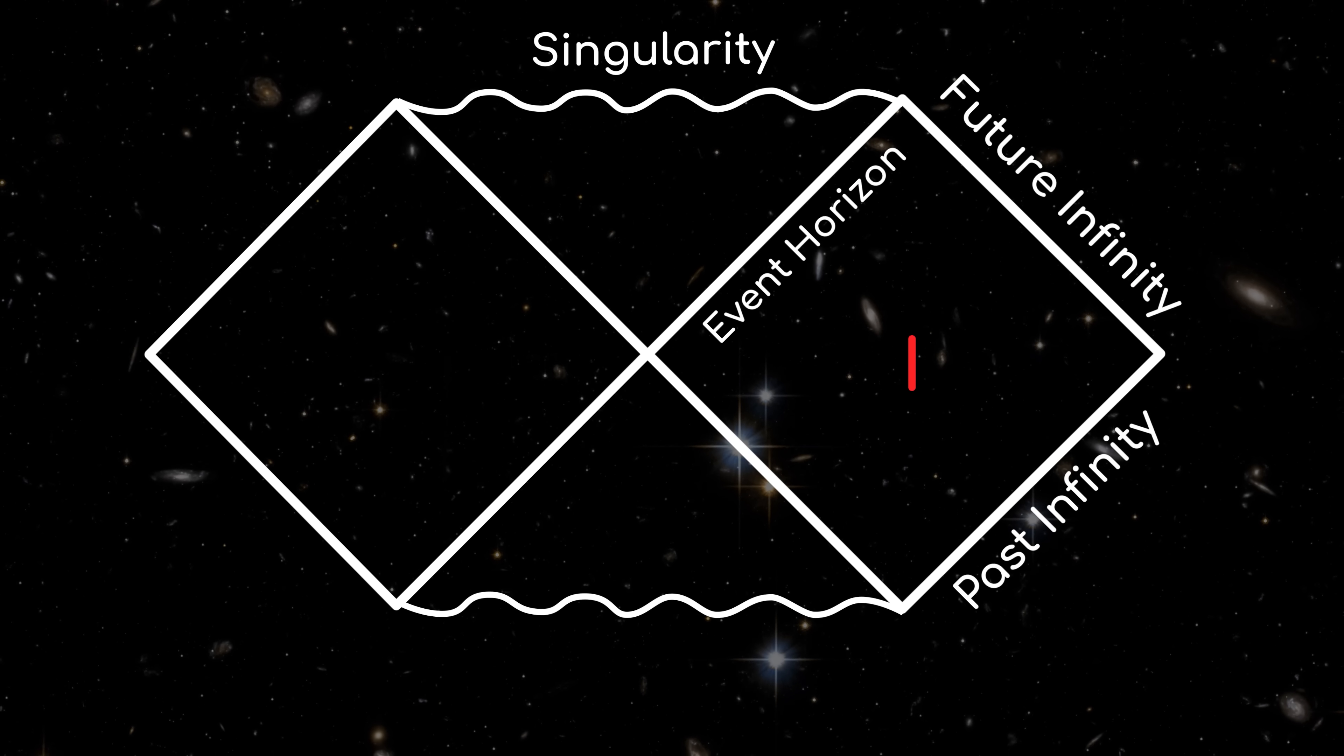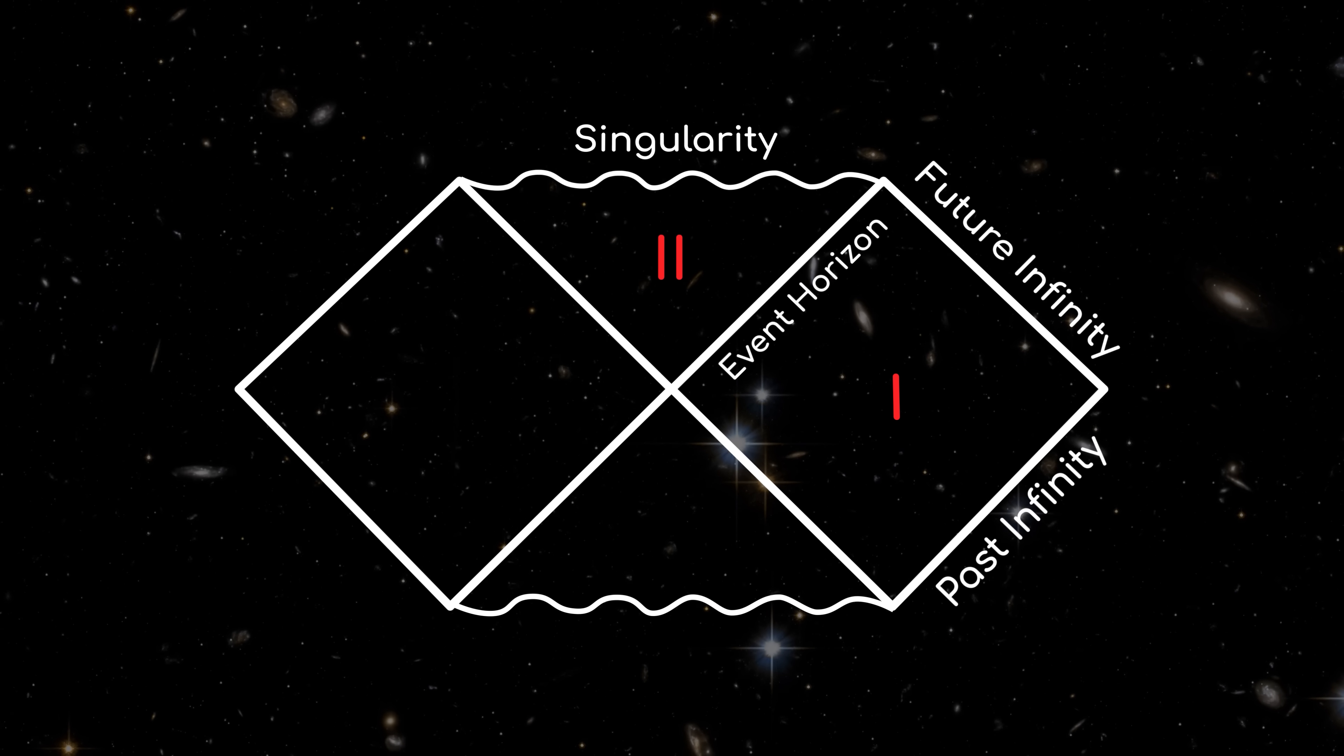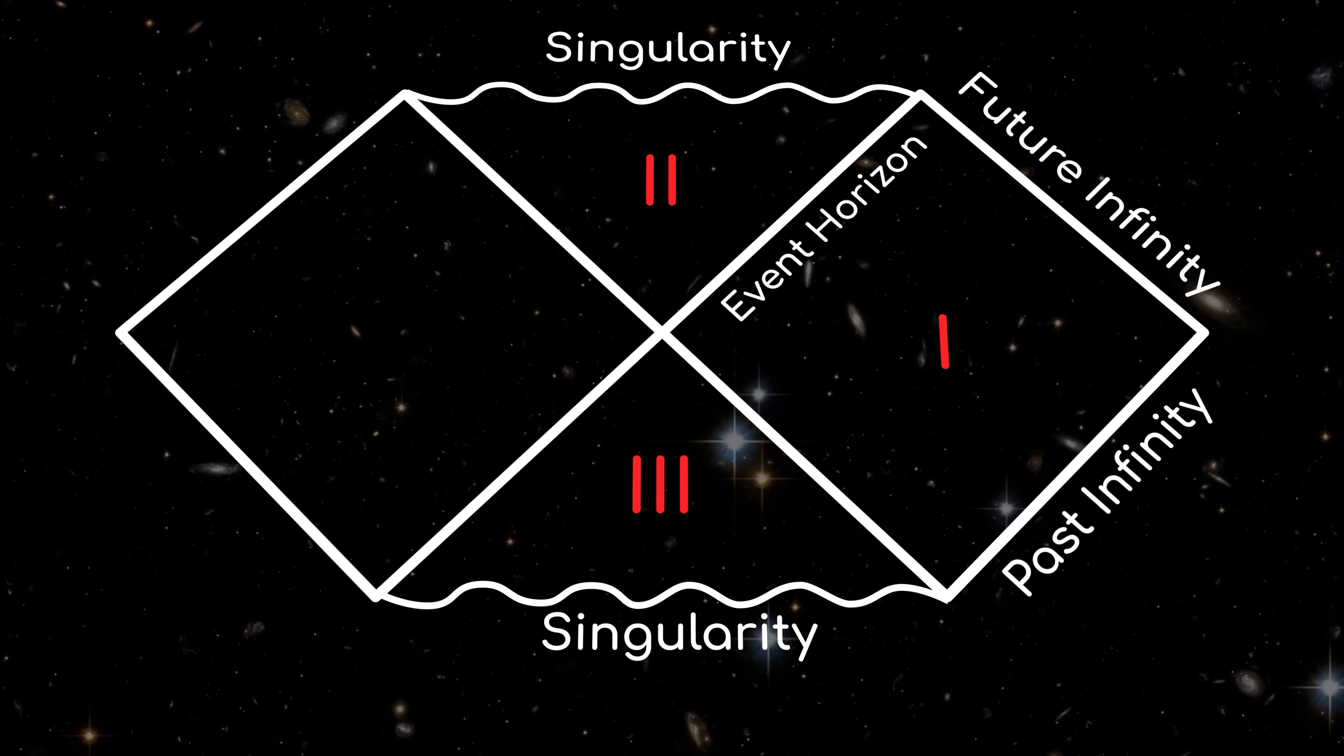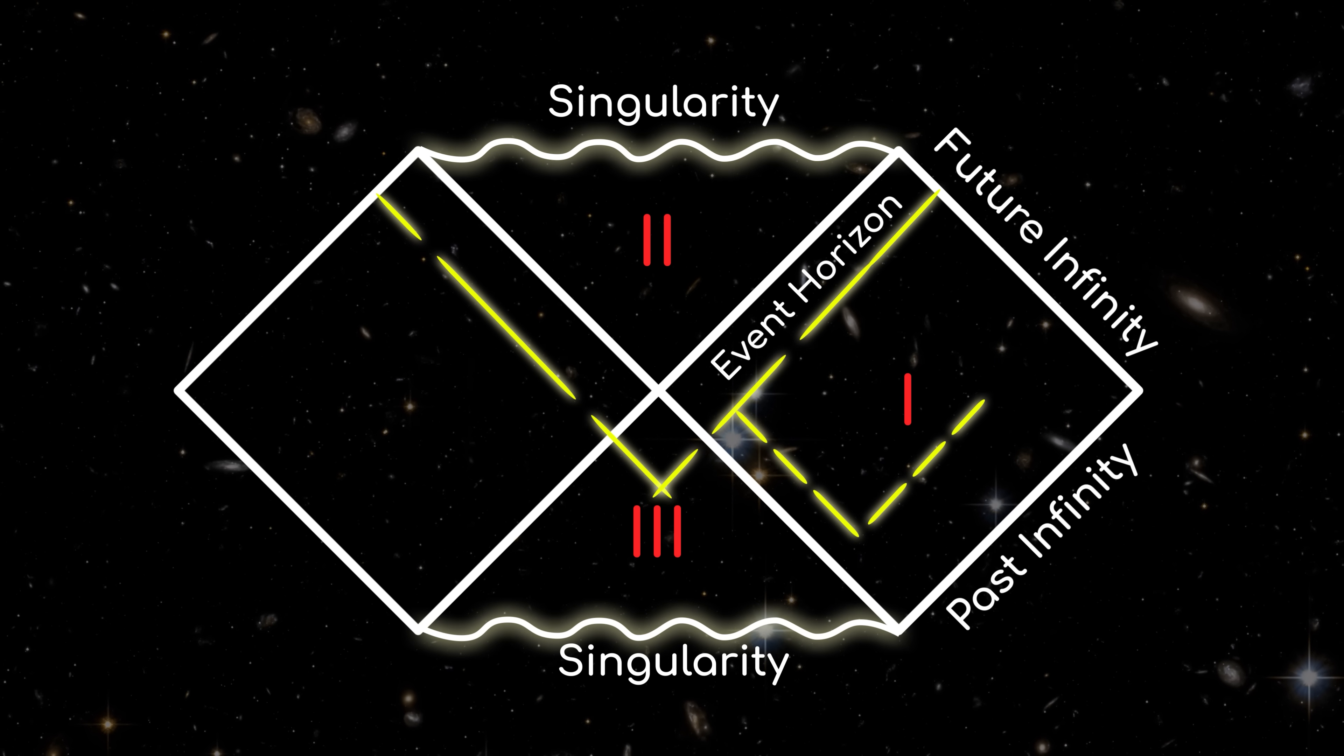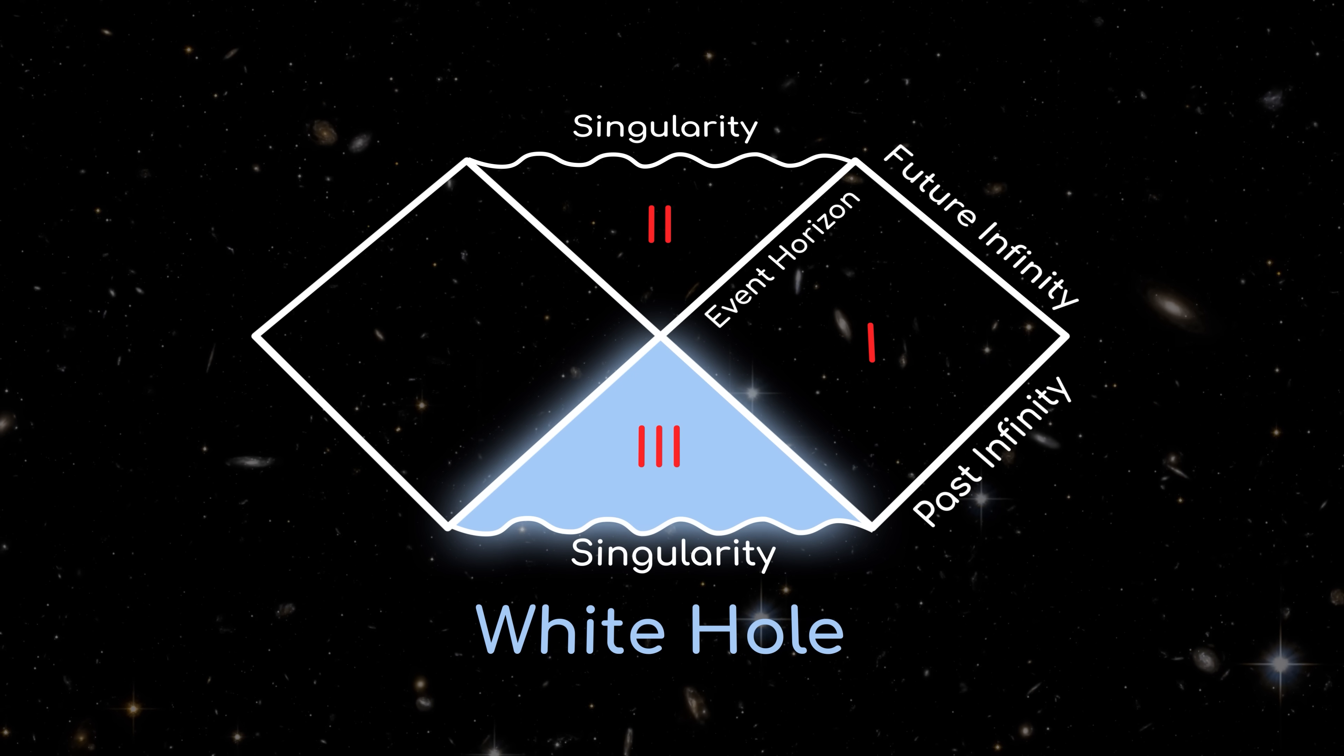Region 1 is still our regular universe, and region 2 is still a black hole with an inevitable singularity in its future. But the maths also describe something that looks like the inverse of a black hole in region 3. Instead of a singularity in its future, region 3 has a singularity in its past. And if you draw the motion of light rays at 45-degree angles, you see that it's straightforward for light to leave region 3, but it can never enter it. This type of region is exactly what we would call a white hole.